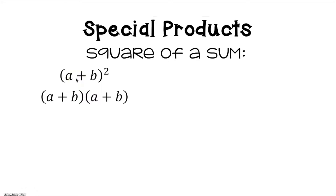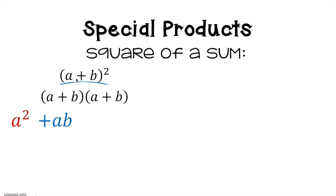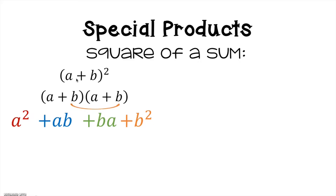We're going to expand these out and the entire binomial is written two times, so you've got (a + b)(a + b). Using FOIL: first is a times a, which gets you a squared. Then outer is a times b. Inner is b times a. And lastly, b times b, which is b squared.